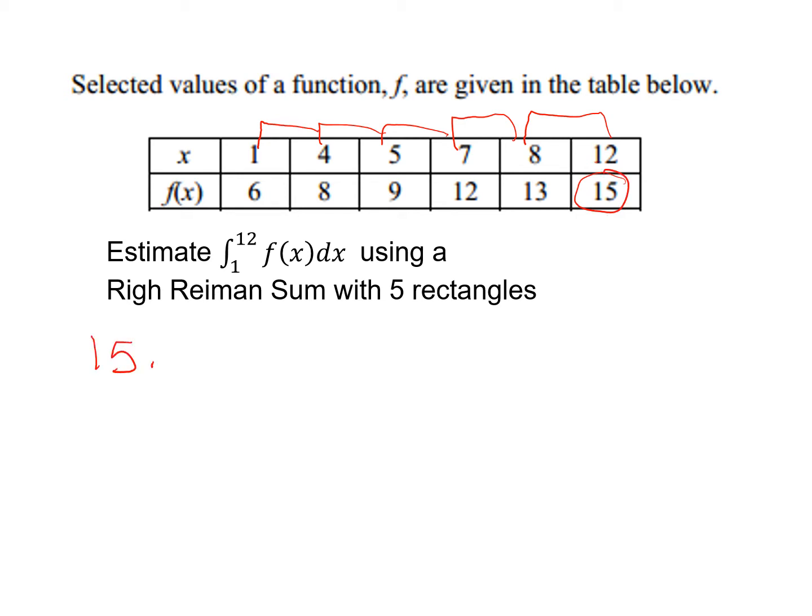So because I'm doing a right Riemann sum, I'm going to start at 15. And from 12 to 8 would be 4. Then I'll take 13. And then from 8 to 7 is 1. Then I'm going to do 12. And from 7 to 5 is 2. Then 9. And 5 to 4 is 1. And then 8, 4 to 1 is 3. Notice I didn't use 6 this time because I'm doing a right Riemann sum.